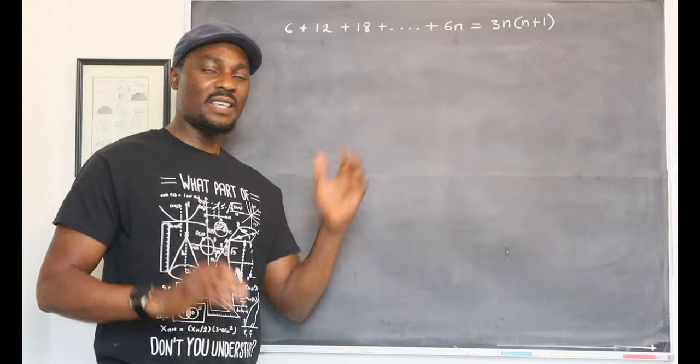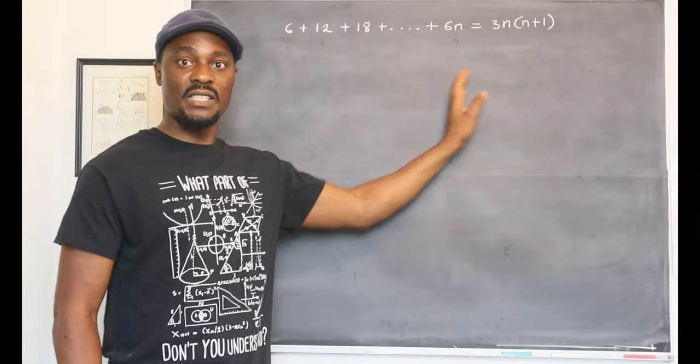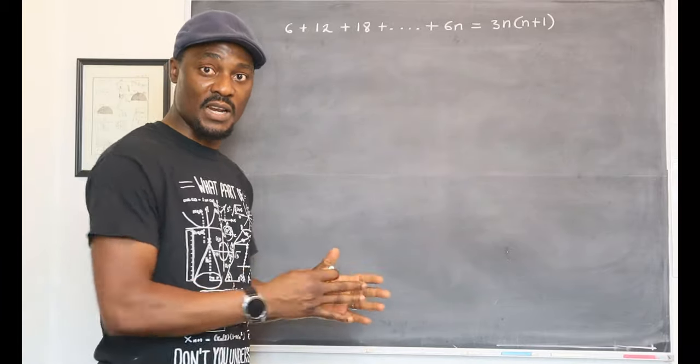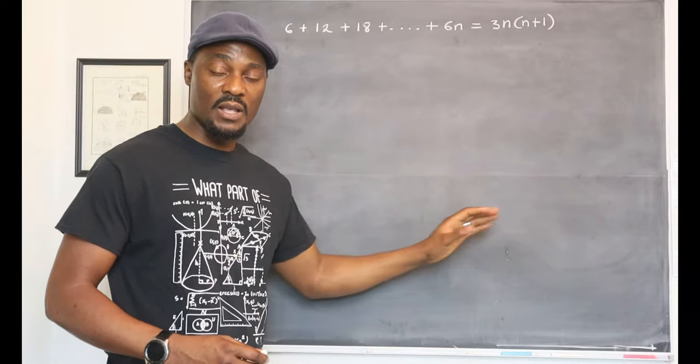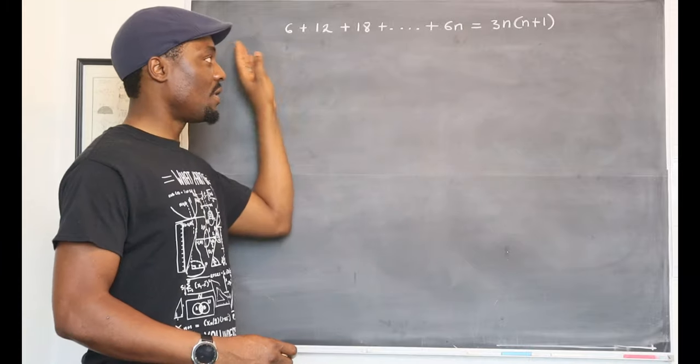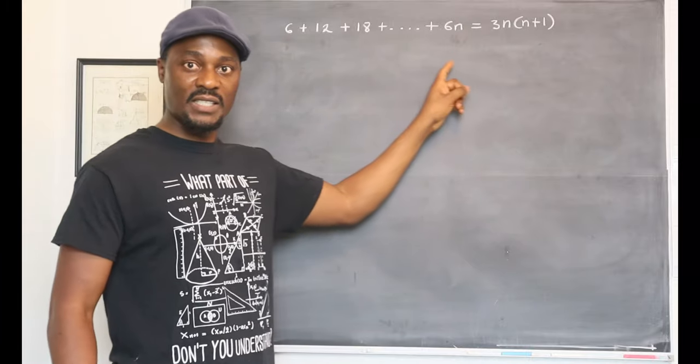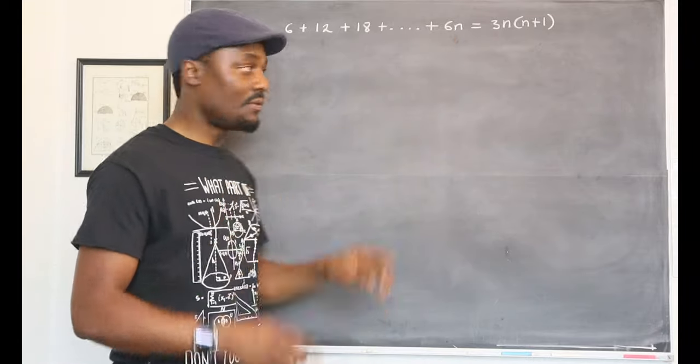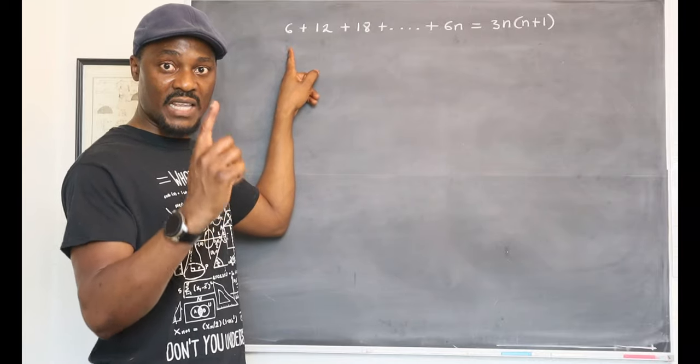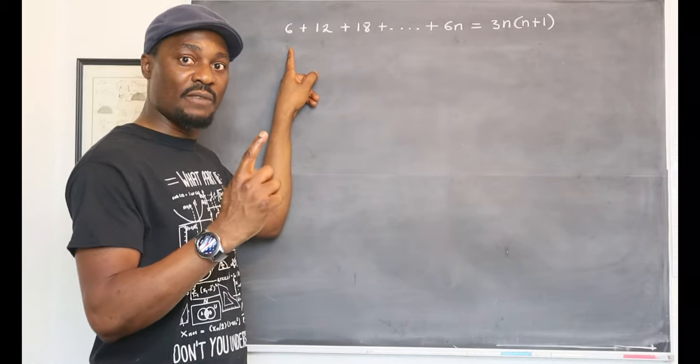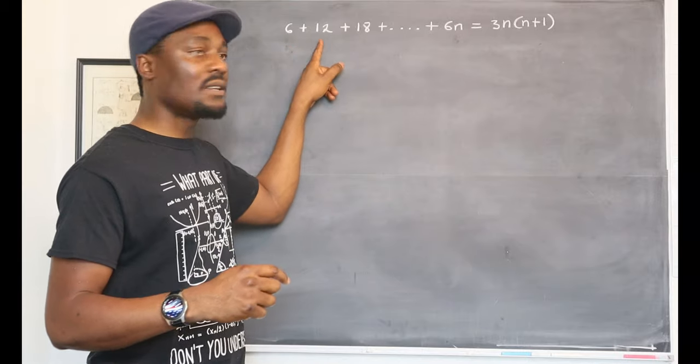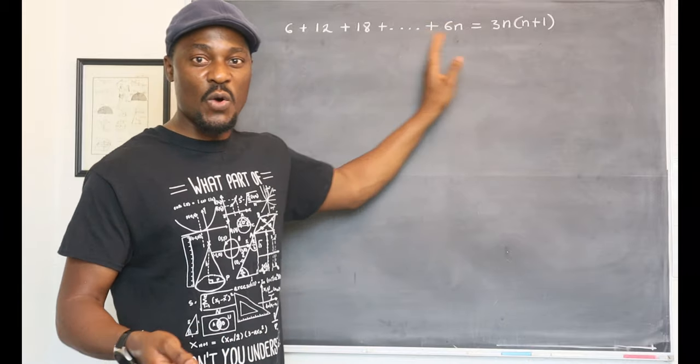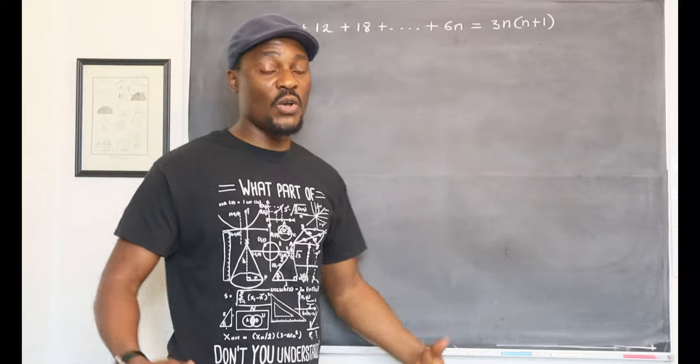Now, this is a series because you're adding the terms in a sequence together. If you don't have the addition or subtraction signs between terms, you call it a sequence because there's a rule that governs it. Every term is determined by a rule. For this series, every term is determined by multiplying the number of that term by 6. For example, the first term has the number n equals 1, so you multiply n by 6, which gives you 6. The second term will be 12, the third term 18, the fourth term 24. You keep going until you get to any term which we generally call 6n.